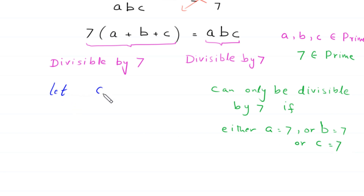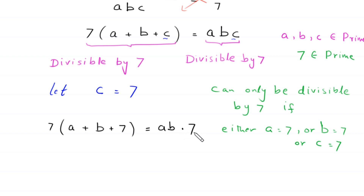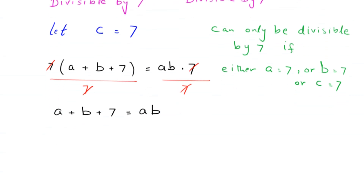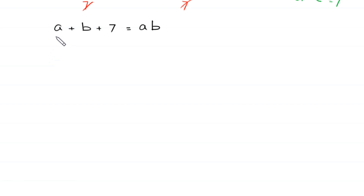Let's suppose that c is equal to 7. We replace c with 7 in our equation. This becomes 7 times (a + b + 7) equals a times b times 7. Dividing both sides by 7, the equation becomes a + b + 7 = ab. Rearranging, this gives ab minus a minus b equals 7.